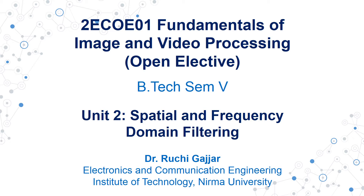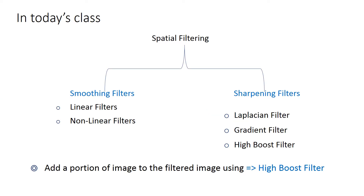We had started with spatial domain filtering, wherein we had studied about point operations in the previous classes. Recently we are discussing about neighborhood operations. In neighborhood operations — what we call filtering — under spatial filtering there are two types: one is smoothing and the other is sharpening filters.